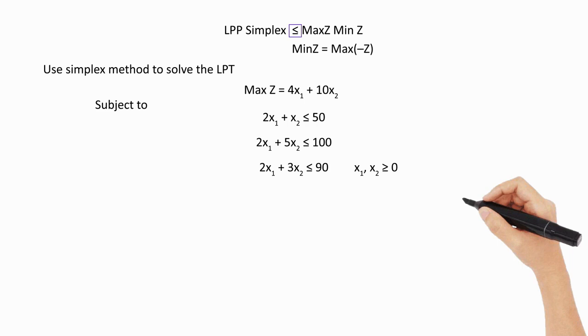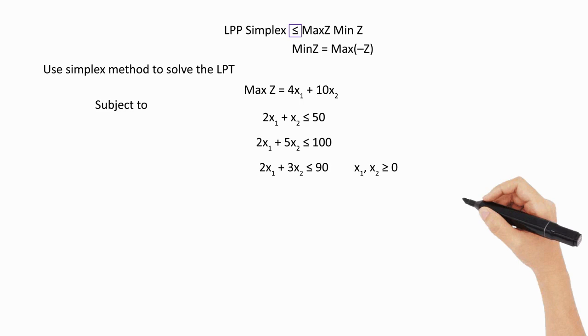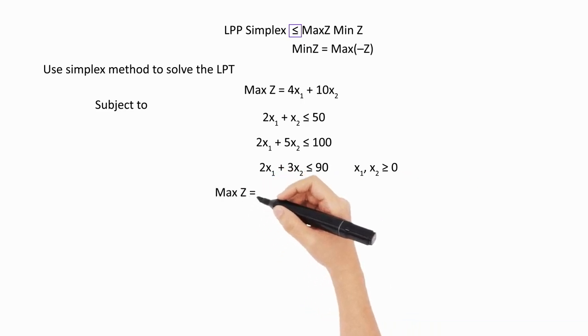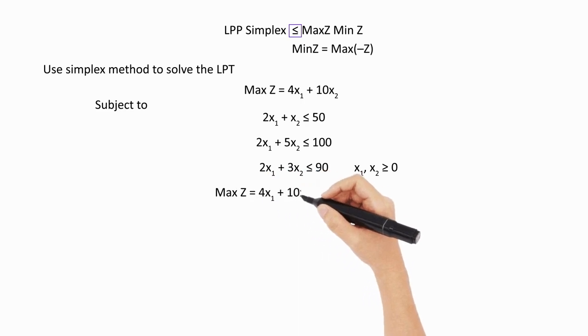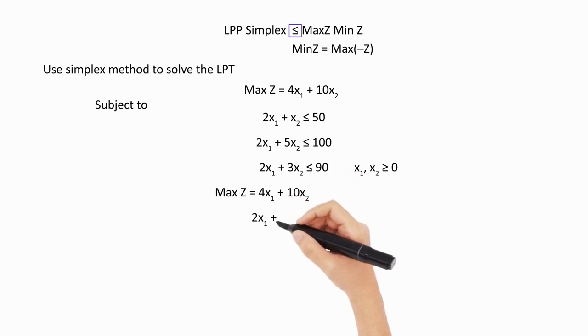The next step is we bring the actual given LPP into standard form. How do we bring it to the standard form? We have to write down the objective function at the first step as it is: 4x1 + 10x2.